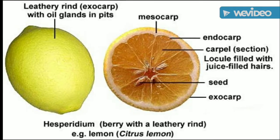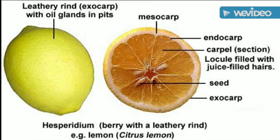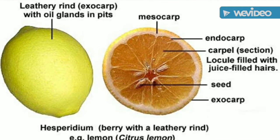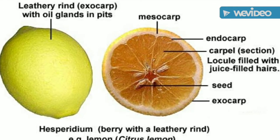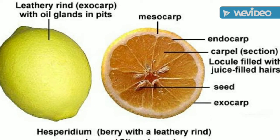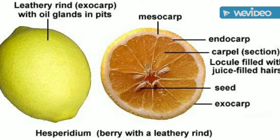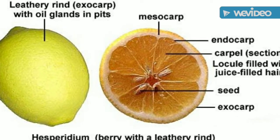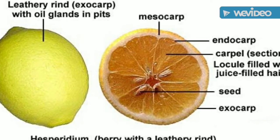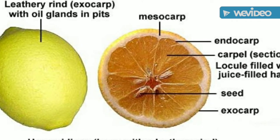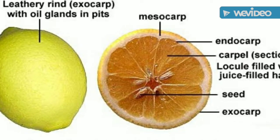Another one is hesperidium. The endocarp is filled with a number of juicy hairs. The epicarp is leathery and filled with oil glands.